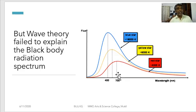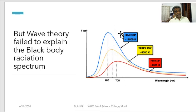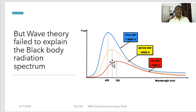Wave theory failed to explain the black body radiation spectrum — why energies are low at lower wavelengths and why the energy falls at higher wavelengths. This failure of wave theory at lower wavelengths — that is, high frequencies — is usually called the ultraviolet catastrophe.